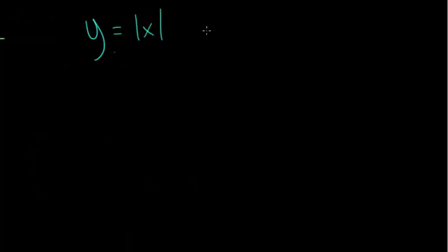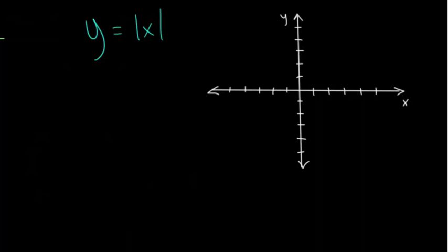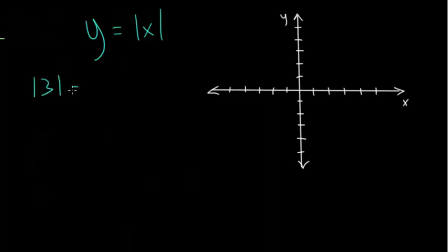Let's make a quick sketch of this. To plot this function, we could make a table and just plot some points. This particular function is not too difficult to think through. Remember with absolute value that the main idea is that whatever you plug inside the absolute value, it comes out as a positive number.